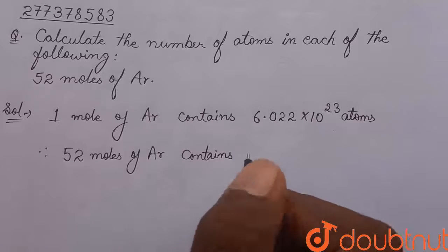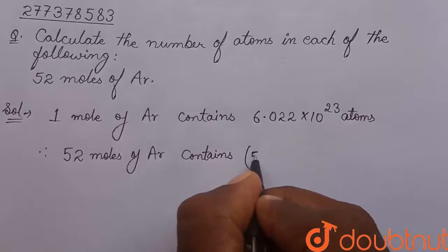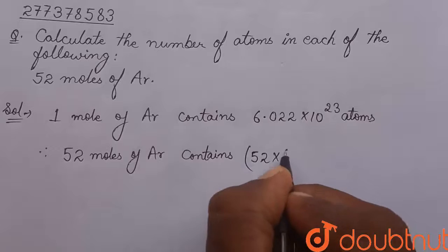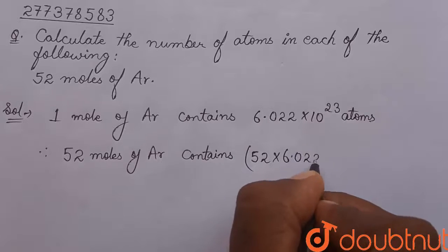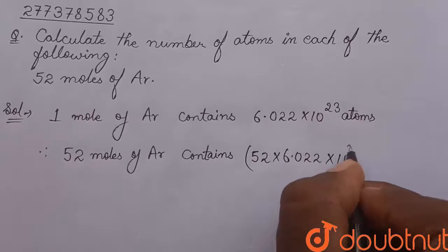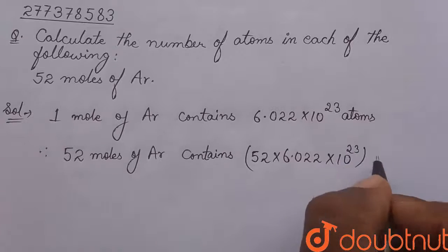So, just multiply it by 52. So, we can write here, contains 52 x 6.022 x 10 to the power 23 atoms of argon.